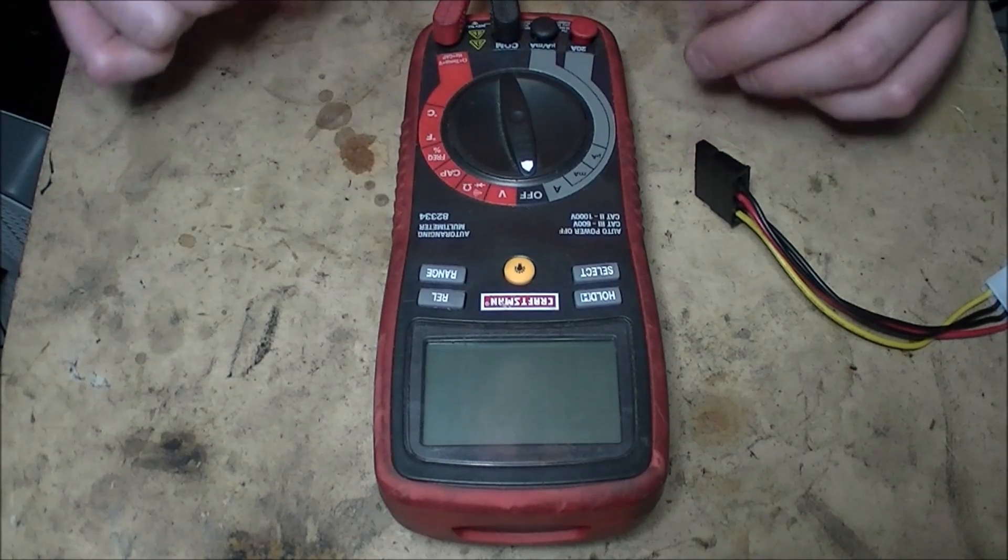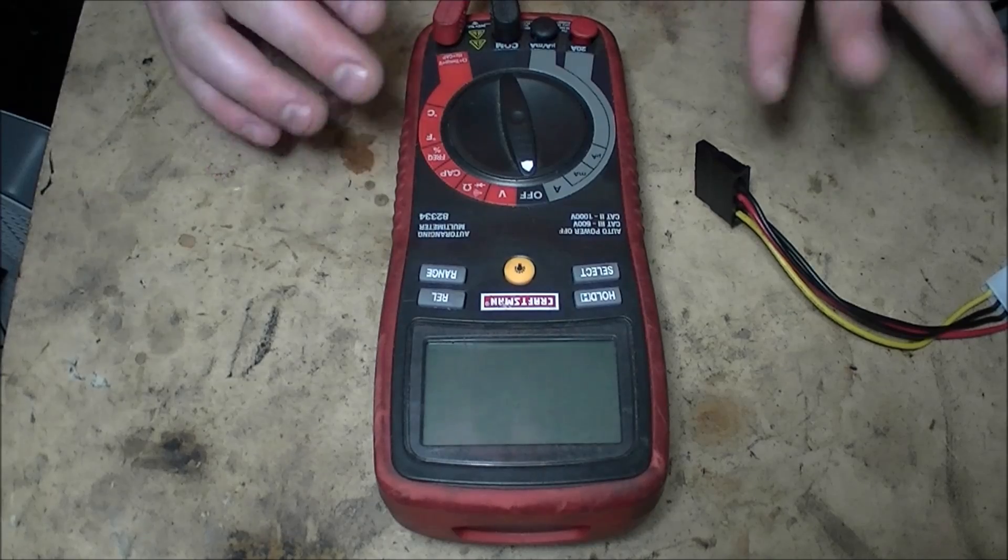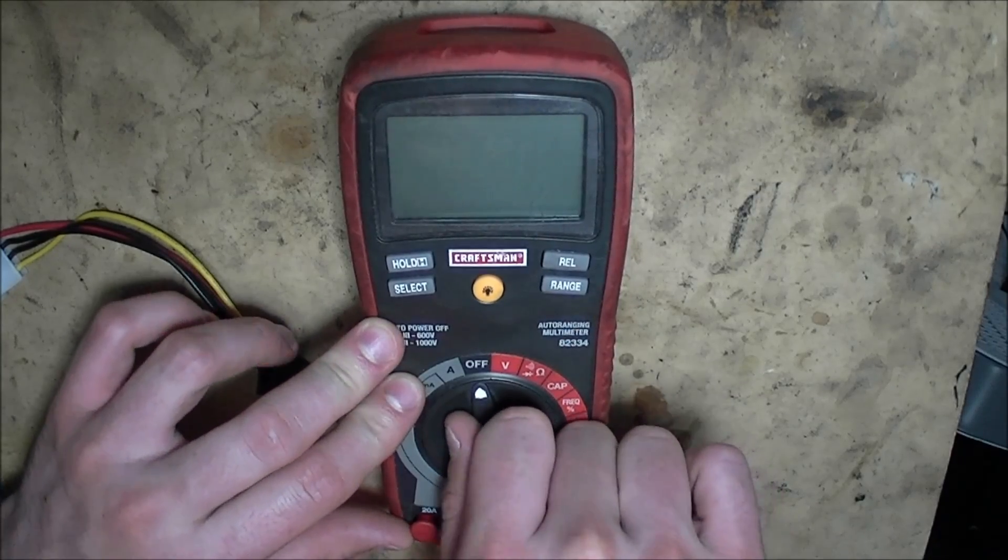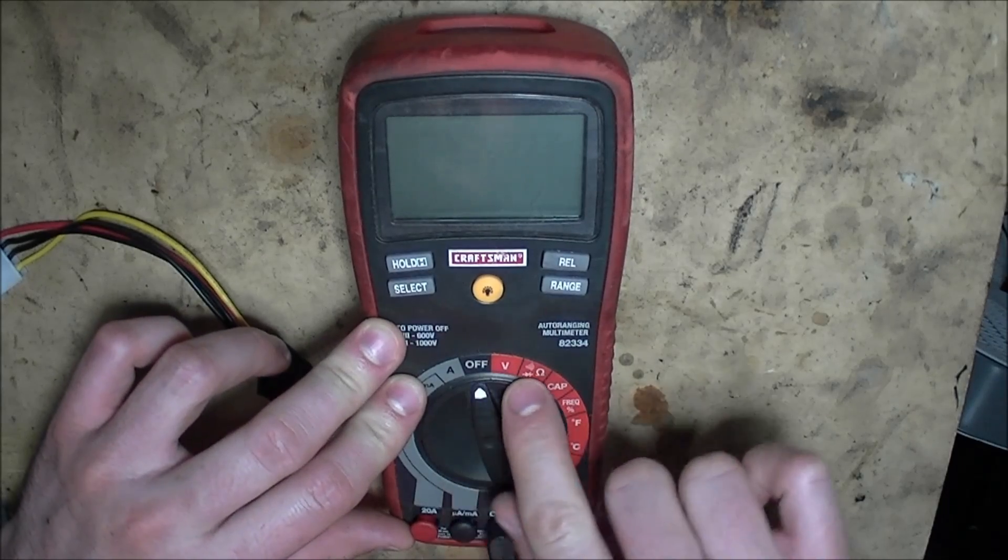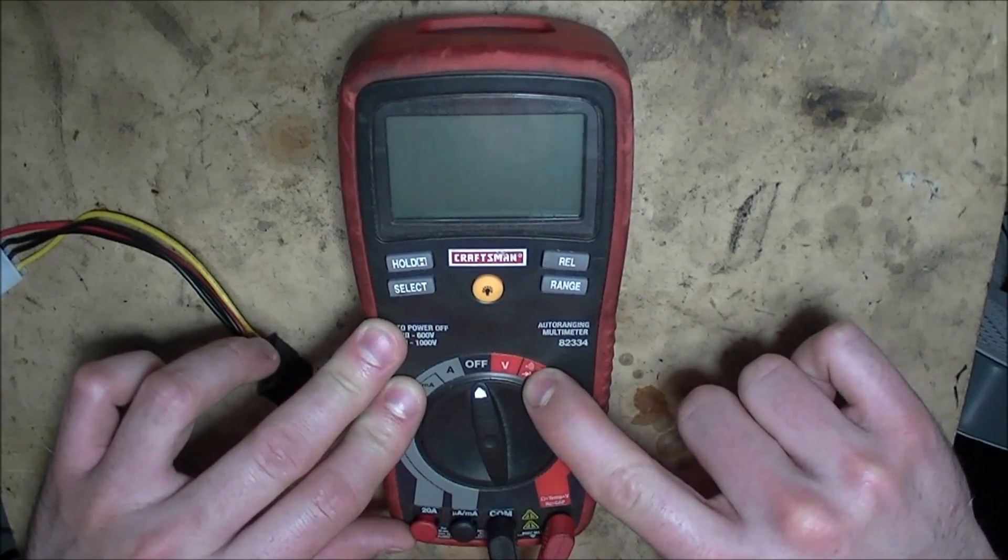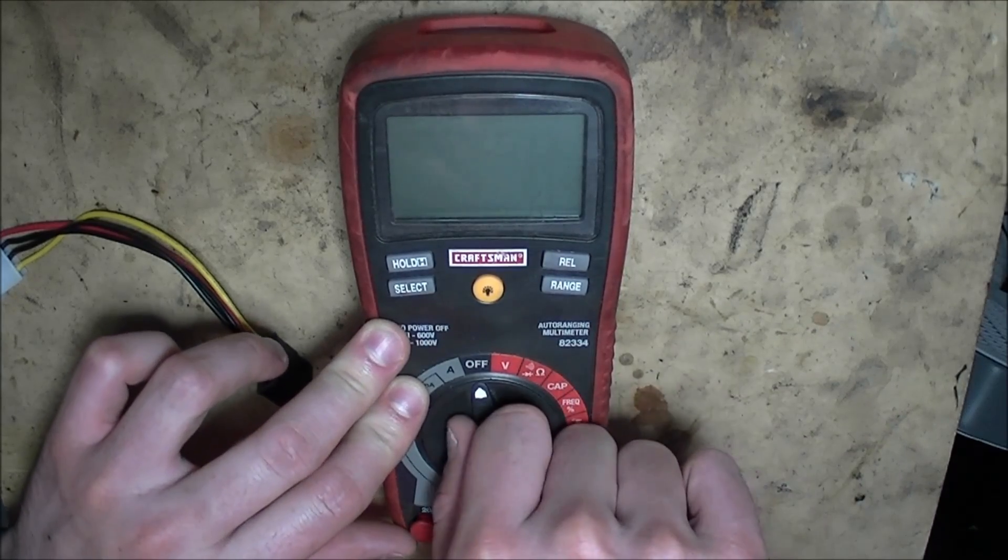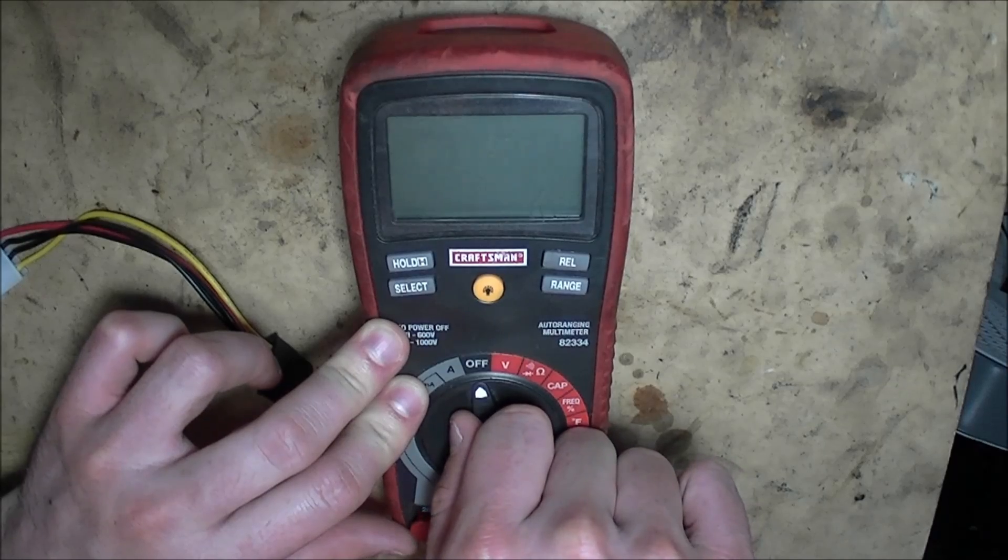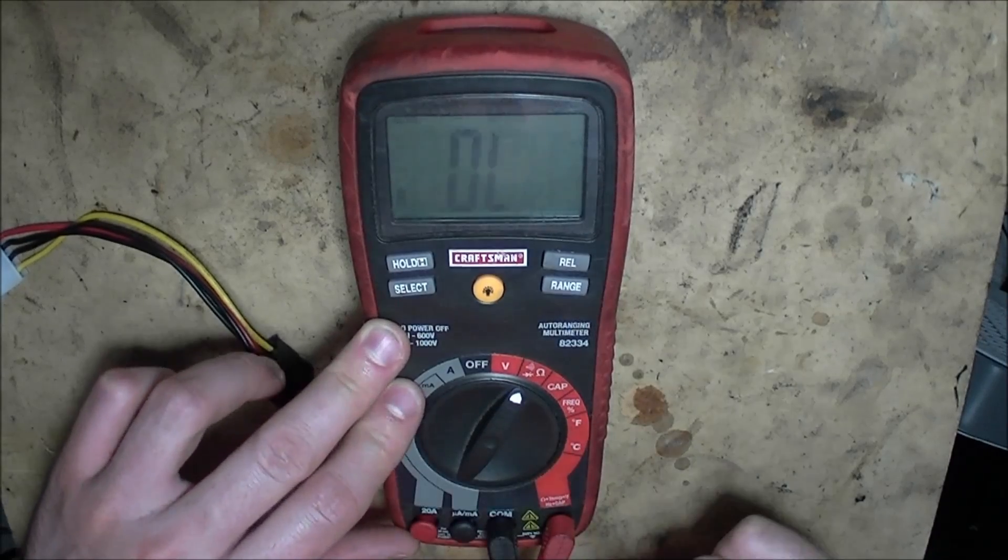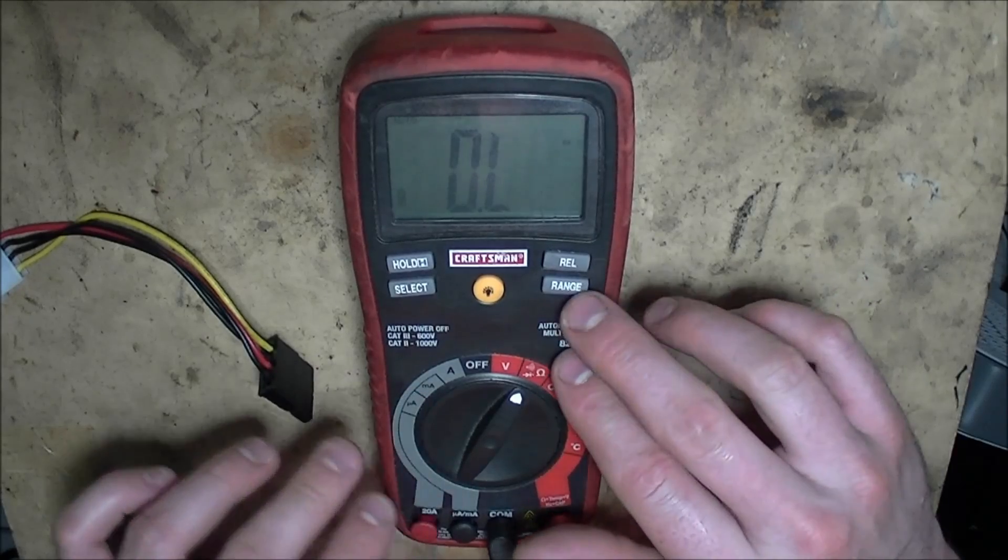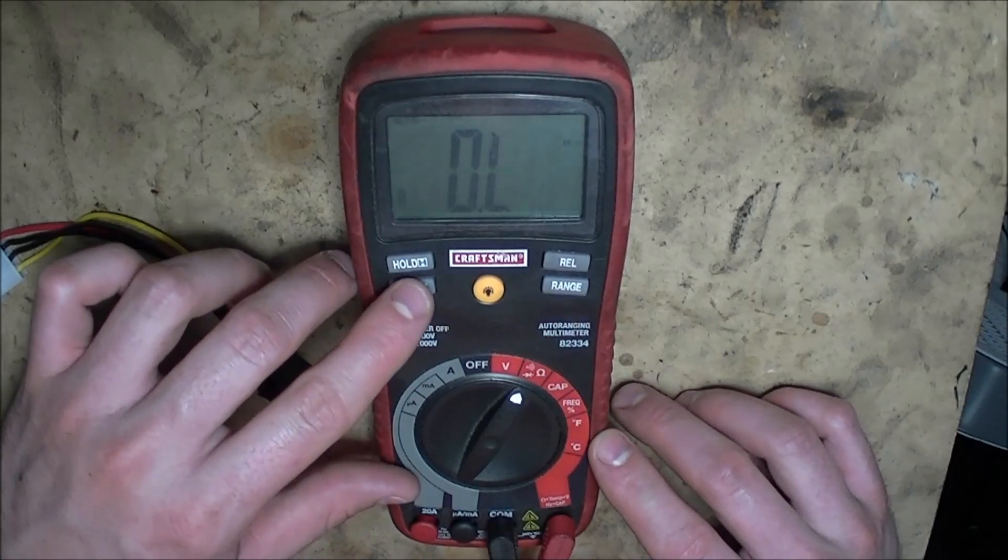So first things first, we're going to set our multimeter to continuity. What you're going to do is turn it to where you see a little sound wave—it looks just like a Wi-Fi antenna signal icon. We set it to that. Mine has a selection button, so I can hit select and it'll change until it goes to the Wi-Fi mode, which you can see right there.